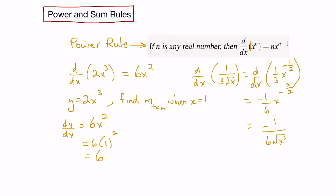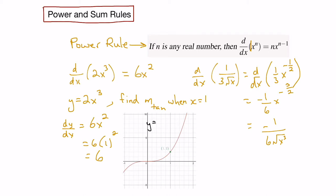Let's look at it graphically. Here's a graph of the function y equals 2x cubed. If we drew a tangent line at the point where x equals 1, the slope of this particular line would be 6.